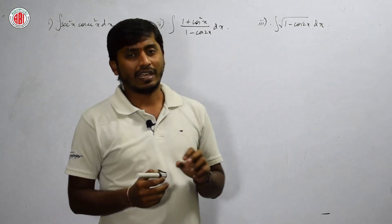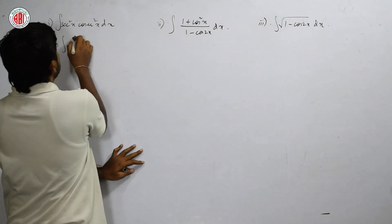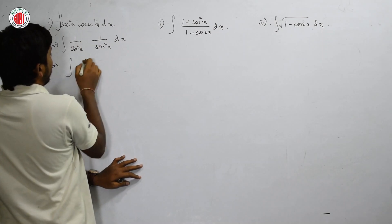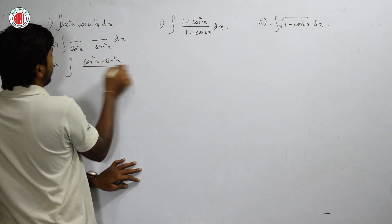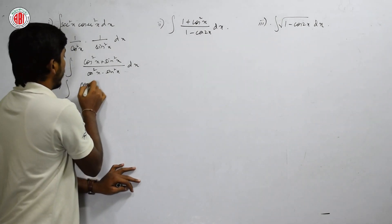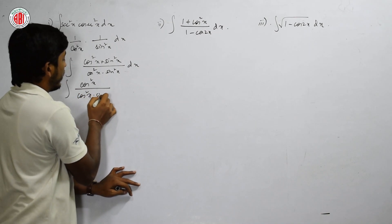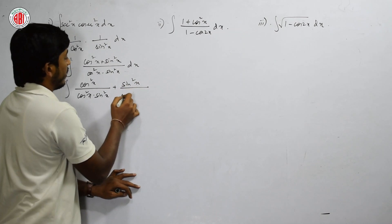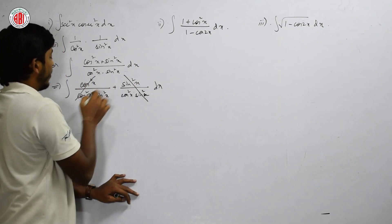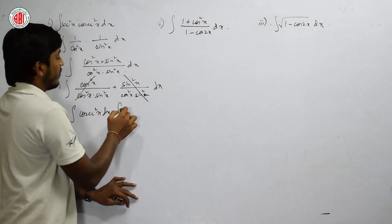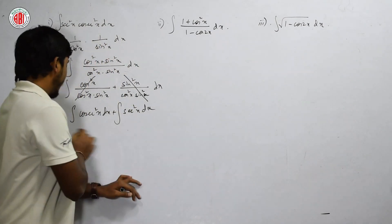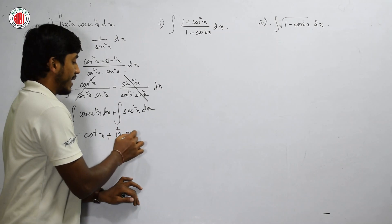How do we simplify? Write sec²x as 1/cos²x and csc²x as 1/sin²x. The numerator 1 can be written as cos²x + sin²x. Separating the denominator: cos²x/(cos²x · sin²x) + sin²x/(cos²x · sin²x). After cancellation: 1/sin²x + 1/cos²x = csc²x + sec²x. The integral of csc²x is -cot x, and the integral of sec²x is tan x + c.